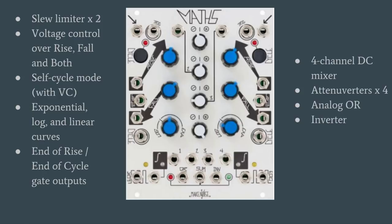Next, you want a four-channel DC mixer. It's very important that it's DC coupled because in addition to mixing audio, we also want to use it to combine control voltage. Next are four attenuverters, which are on the input for every channel on Maths, an analog OR circuit, and an inverter. So that's it — that is all that is in Maths.